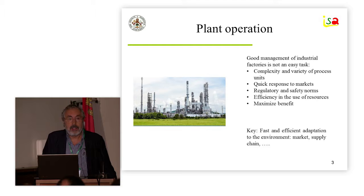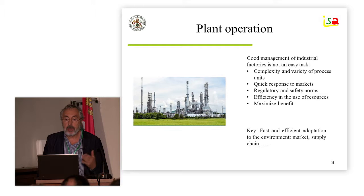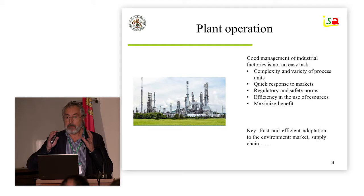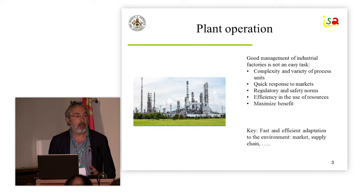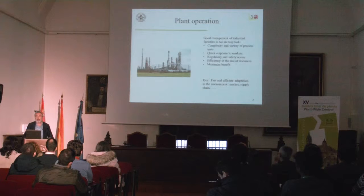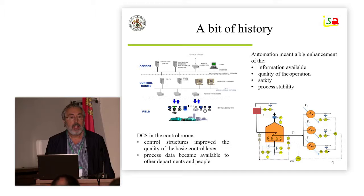Plant operation is not easy at all, and this is not only because of the complexity of the processes, but because you have to manage so that the plant adapts to the different situations of the environment. This includes the markets and the products you receive, supply chains, and so on. And you have to operate maximizing profits and minimizing the use of resources and many other things.